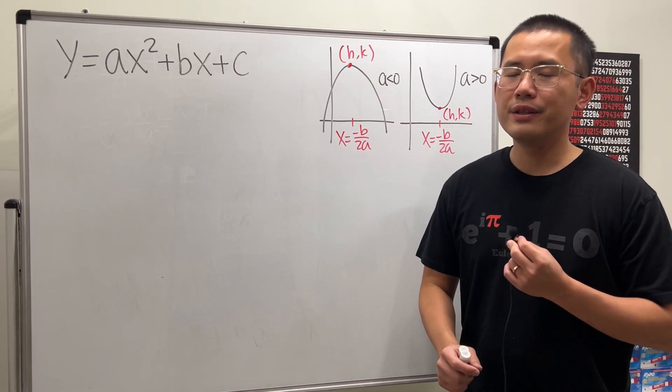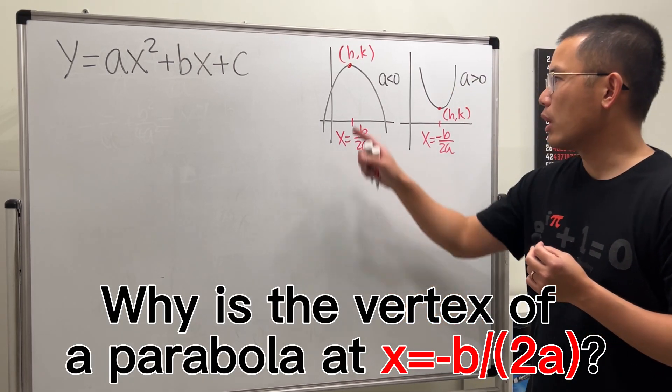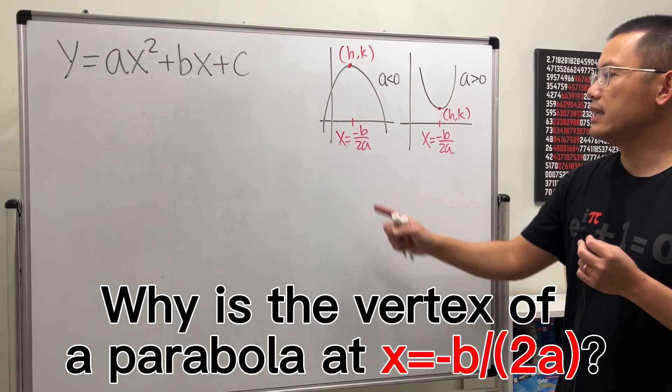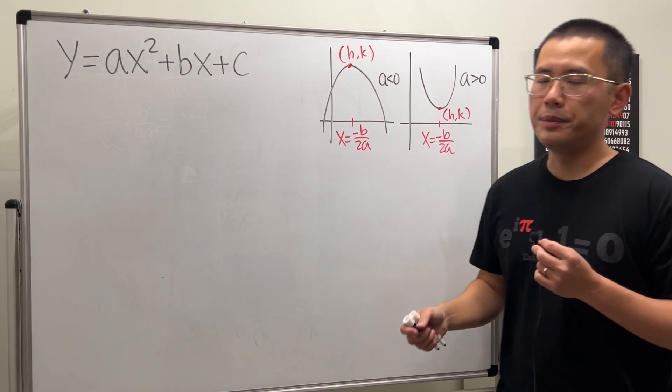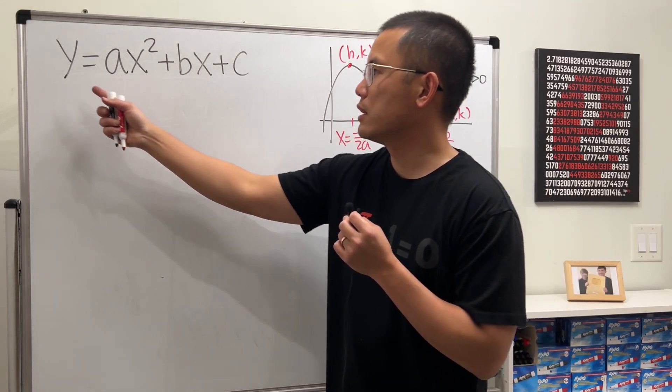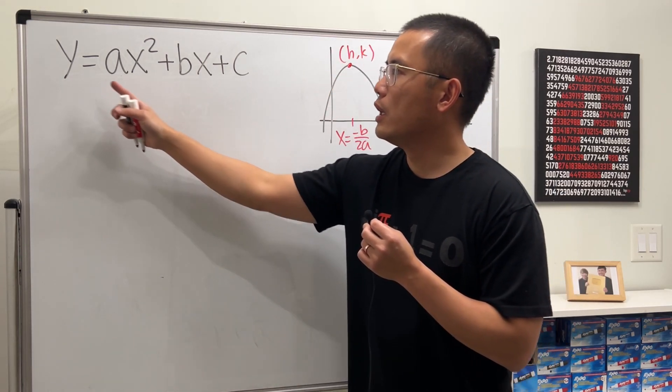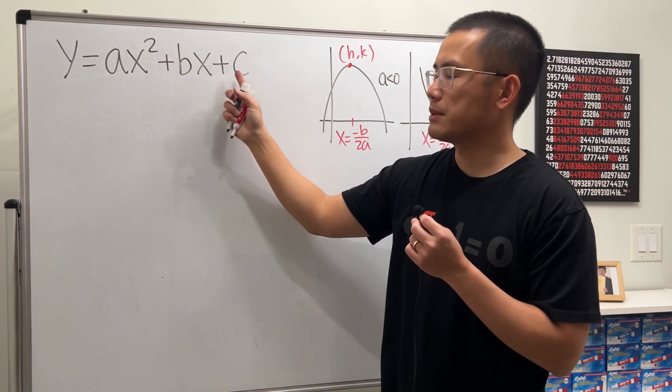So today, I wanted to answer the question: why is the vertex of a parabola always going to be at x equals negative b over 2a? Suppose we start with the standard form of a quadratic equation, y equals ax squared plus bx plus c.